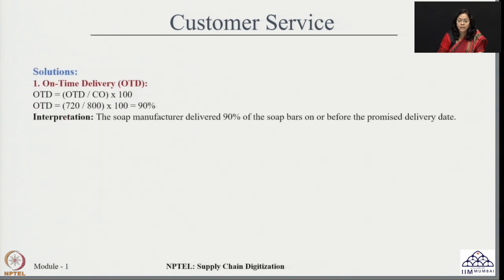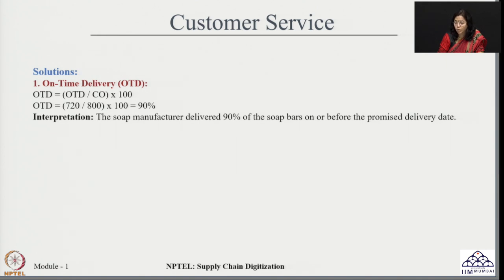Using the given data, on-time delivery is coming around 90 percent. This means the soap manufacturer is able to deliver around 90 percent of soap bars on time or before the promised delivery date. It indicates that 90 percent of soap bars are delivered on time or early, ensuring that the organization is doing an excellent job of fulfilling given orders on time.